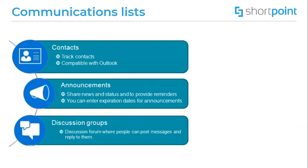Here is another group of lists: communications lists. We have here contacts, announcements and discussion board. You can use a contacts list to store information about people or groups that are working with you, and you can synchronize contacts from Outlook there. Announcements are used to share news and status and to provide reminders to your team members — you can put this announcement on your SharePoint page so everyone will see it. Discussion groups help you create a discussion forum where people can post messages and reply to them. You can require posts to be approved before everybody can see them.